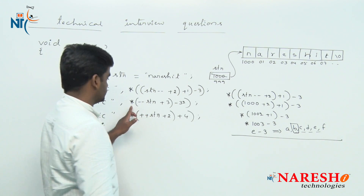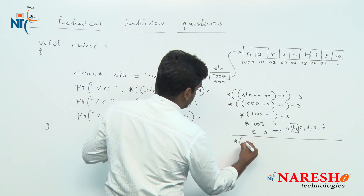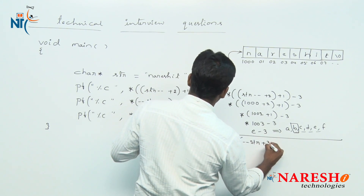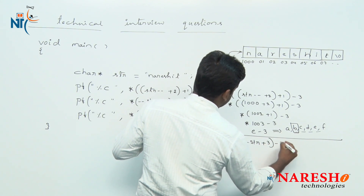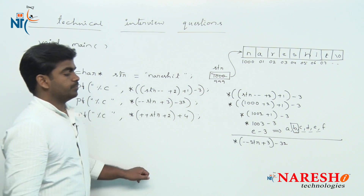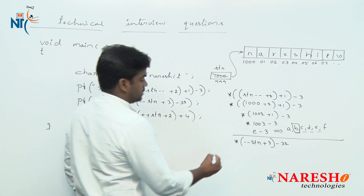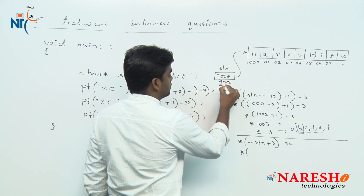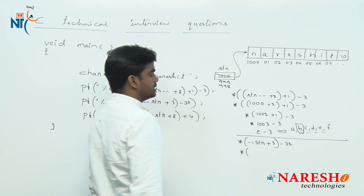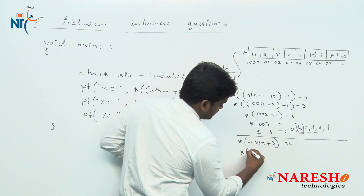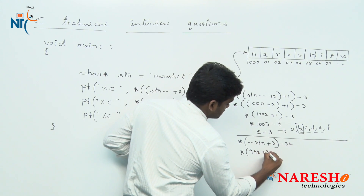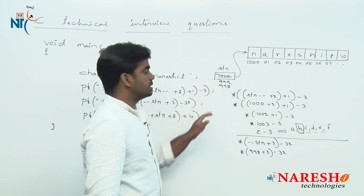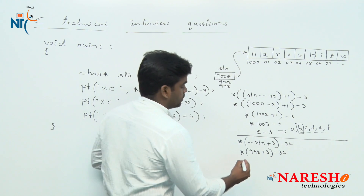Now the second expression: pre-decrement minus-minus str, plus 3, minus 32. Pre-decrement modifies first, so str becomes 998 — decreased by 1. Then 998 plus 3: plus 1 gives 999, plus 2 gives 1000, plus 3 gives 1001.